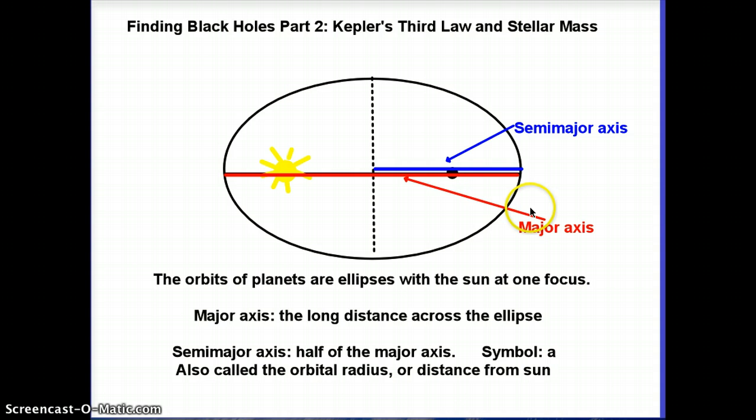Hopefully you remember from math class that in an ellipse there are two foci on either side. In the case of a planet going around the Sun, the Sun is at one focus and then there's another focus that's just empty space.